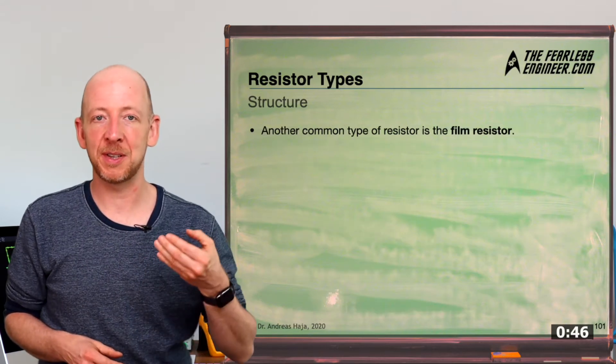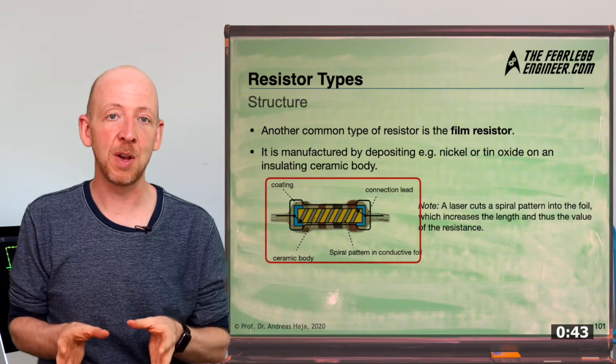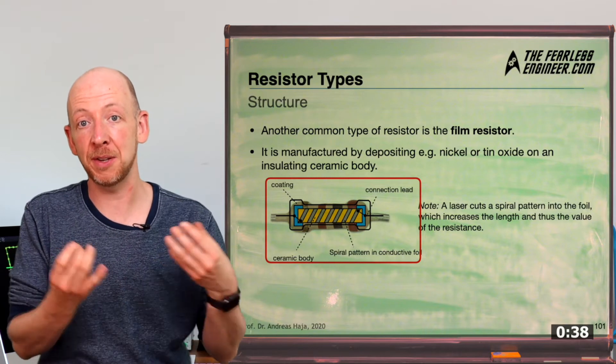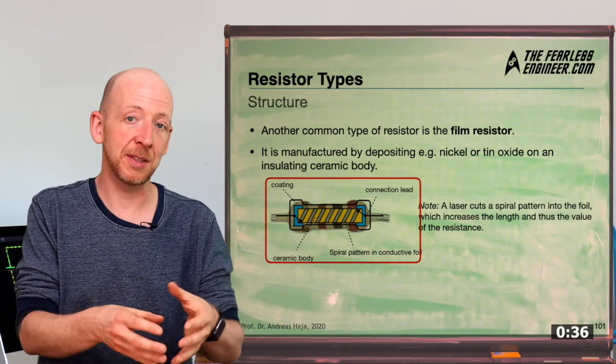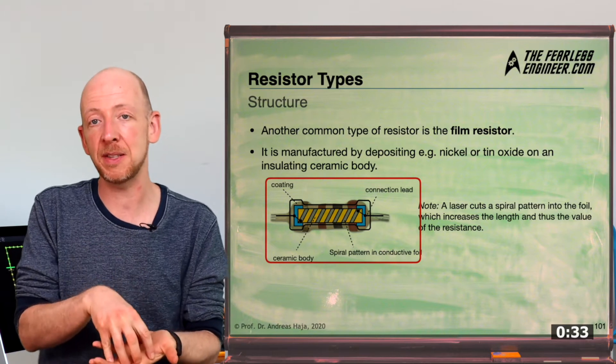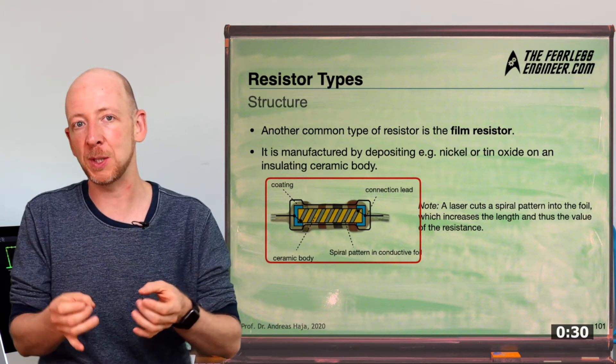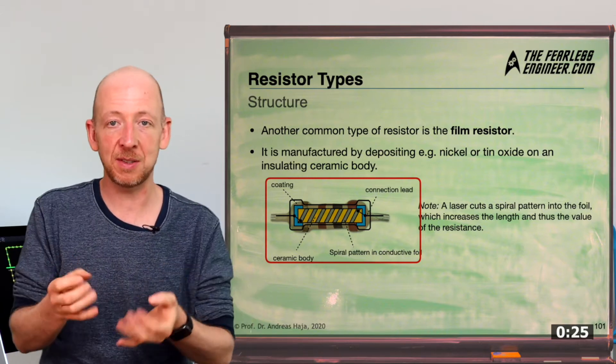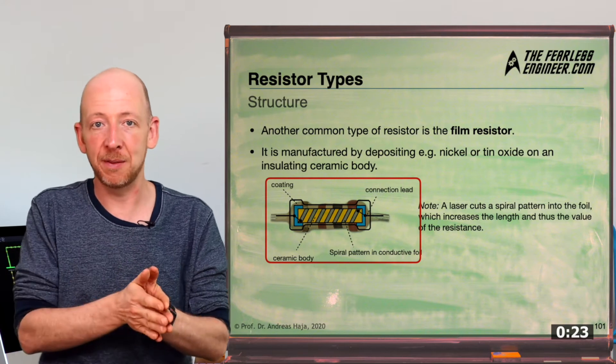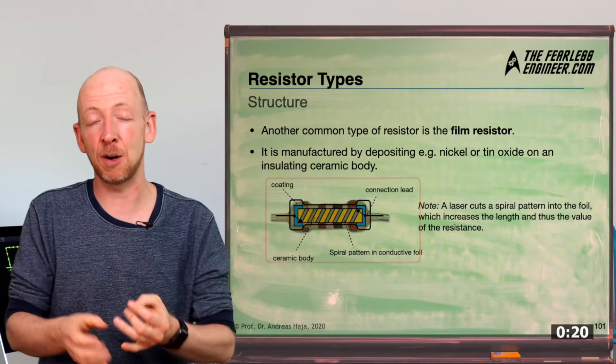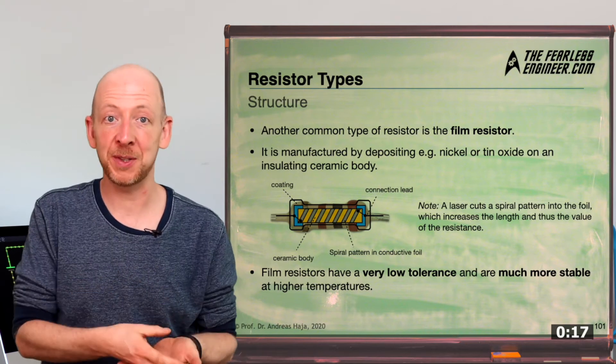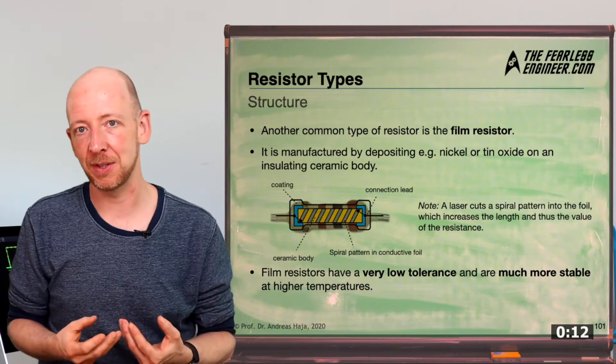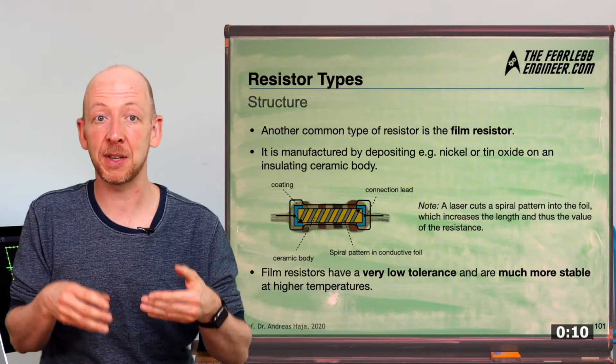Now, another very common type of resistor is the so-called film resistor. As you can see in the diagram below, the structure is very similar to the carbon resistor with an outer coating, the colorings and the connector legs. The main difference here is that the ceramic body is actually an insulator in this case, and the conductive part is a thin metal film which has been cut out by a laser into a spiral pattern. The resistance value can be adjusted by means of this pattern by varying the length of the spiral and also the thickness of its windings. Now, one of the major advantages of film resistors is their low manufacturing tolerance and also the higher stability at increasing temperatures.